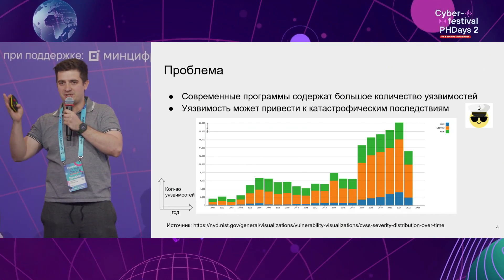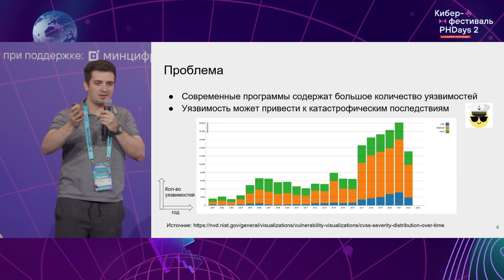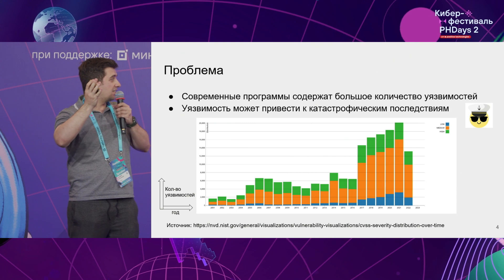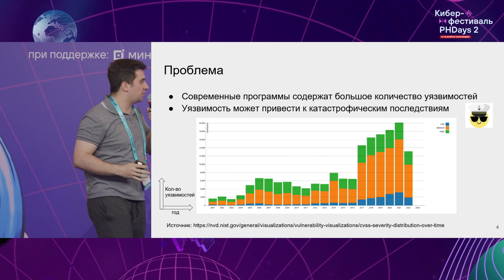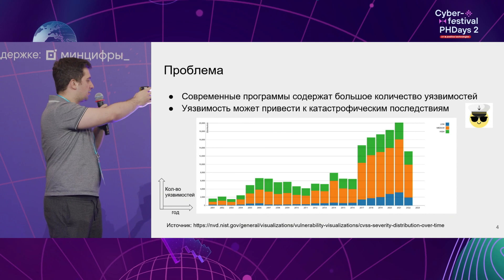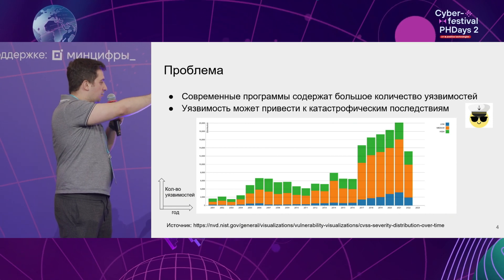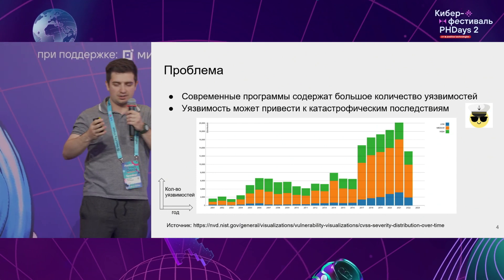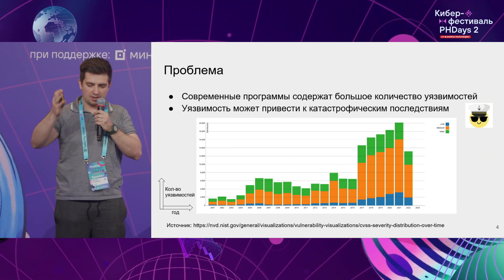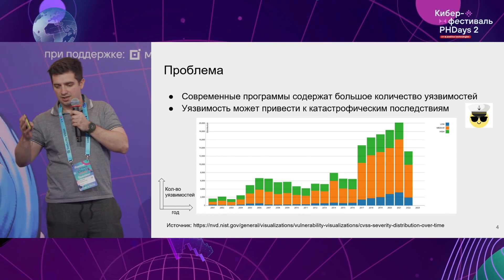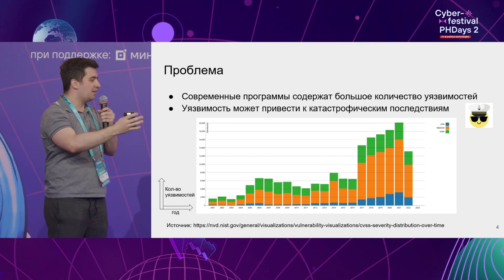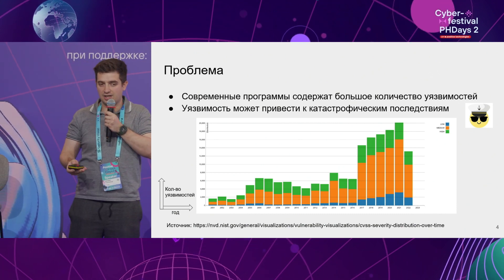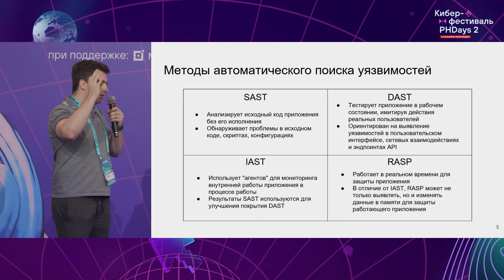I'm not going to tell you for yet another time how vulnerabilities in our software may lead to catastrophic consequences. Rather, I would like to showcase an image illustrating the NVD — National Vulnerability Database — which lists the number of documented and fixed vulnerabilities over the last few years. The problem is still relevant and serious. If it were not serious, we wouldn't be here today.